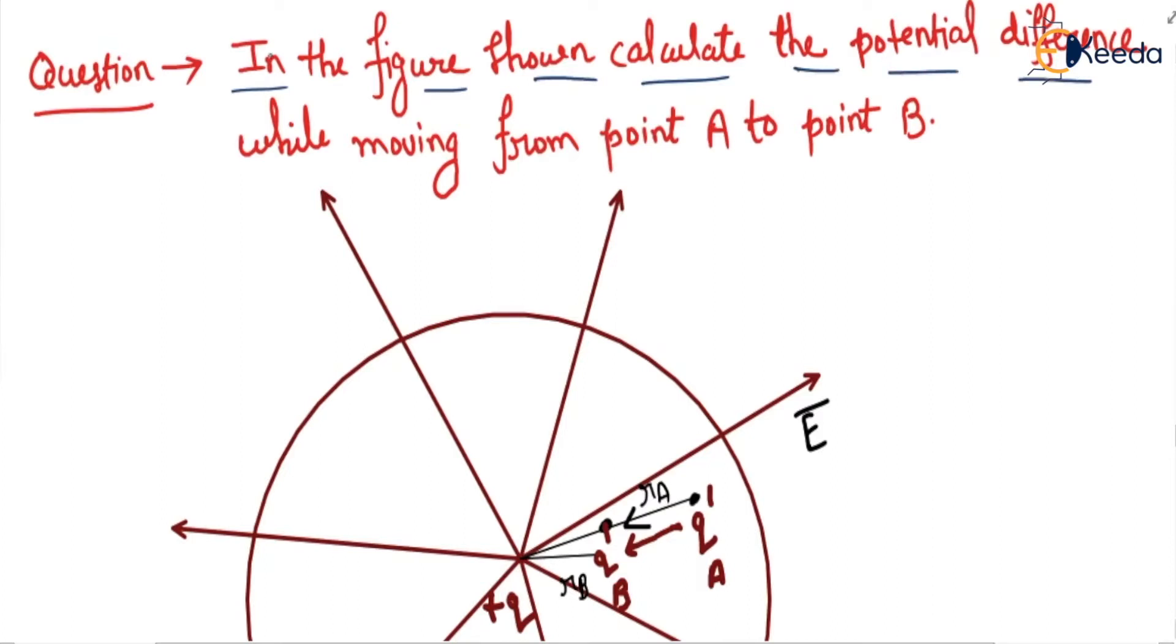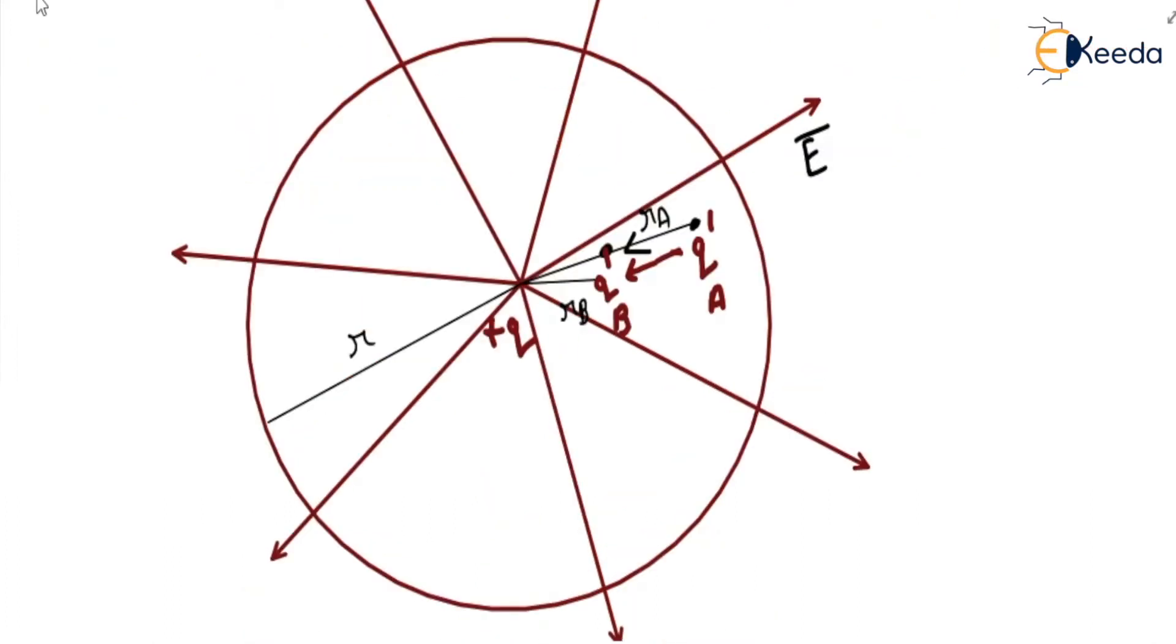Calculate the potential difference while moving charge q' from point A to point B. This is given: a sphere of radius r with charge q placed at the center of the sphere, and charge q' we have to move in the opposite direction of the electric field.